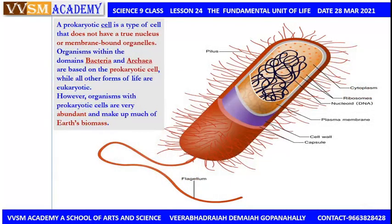What is a prokaryotic cell? It is a type of cell that does not have a true nucleus or membrane-bound organelles. Organisms within the domains Bacteria and Archaea are based on the prokaryotic cell, while all other forms of life are eukaryotic cells.